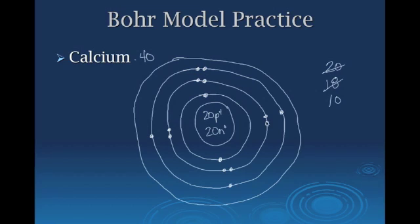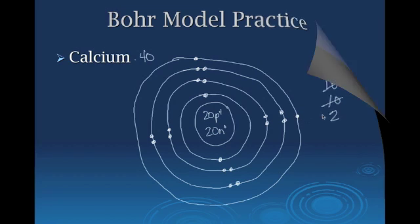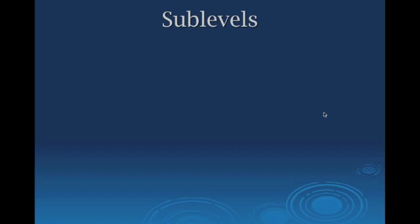This is where the Bohr model starts to fall apart, because the third energy level can actually hold more than eight electrons — but you don't add past eight until you've started filling the fourth. For our purposes, this suffices. After placing another eight, we have two remaining, which go in the outer energy level. The purpose of this is to get you thinking about electrons falling into energy levels, and how moving down a group adds more energy levels to an atom.